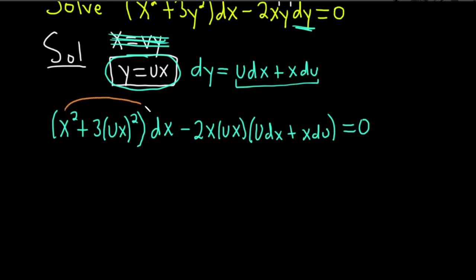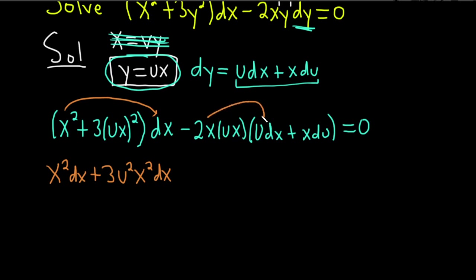Going ahead and distributing: x squared times dx gives x squared dx. The 3(ux)² term gives 3u squared x squared dx. For the multiplication on the right side, x times x is x squared and u times u is u squared, so we get minus 2x squared u squared dx.